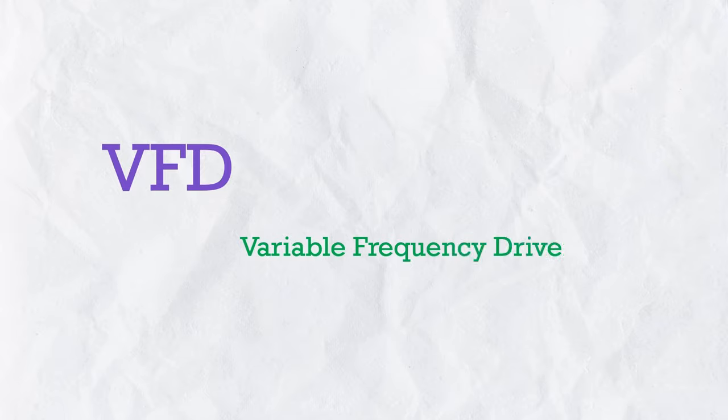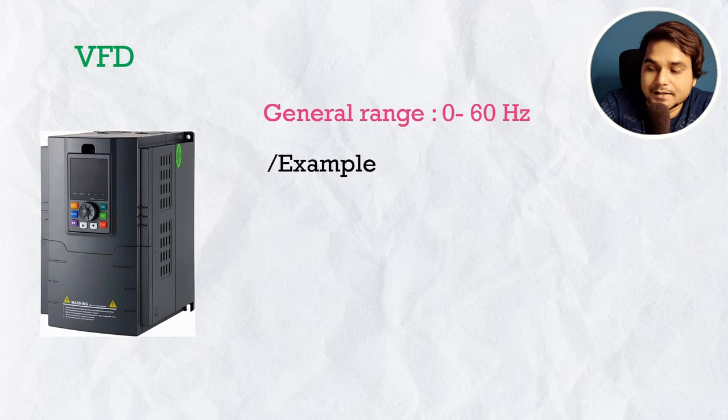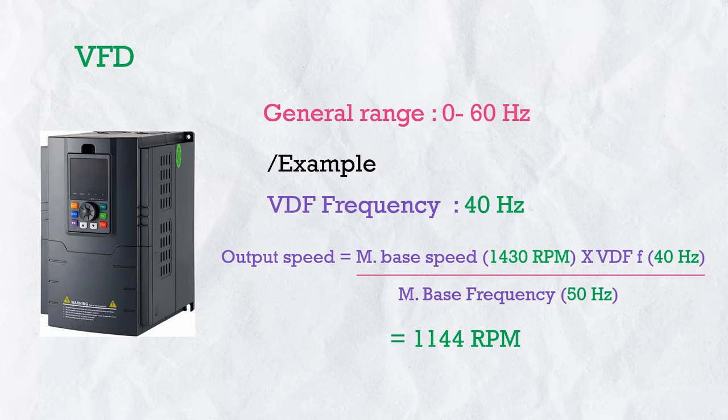If you want variable speed, use a VFD (Variable Frequency Drive). A VFD changes motor speed by changing the supply frequency, typically in the range of 0–60 Hz. For example, driving a 1430 RPM motor with a VFD at 40 Hz: speed = 1430 × 40 ÷ 50 = 1144 RPM. Keep in mind that at lower frequencies, speed decreases and torque also decreases quadratically. That concludes the motor and gearbox selection for a belt conveyor.